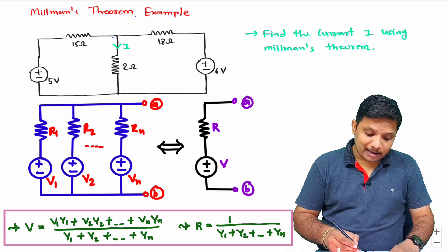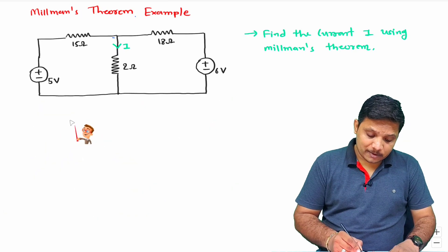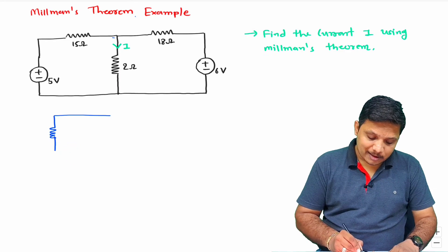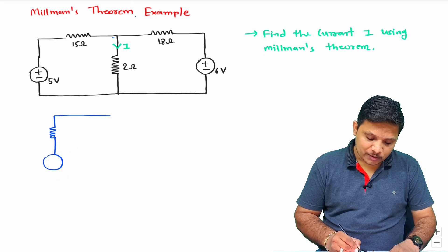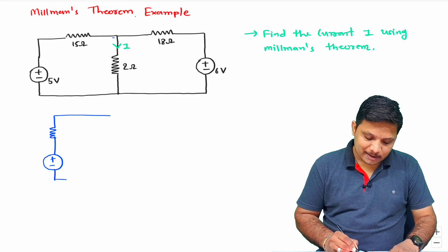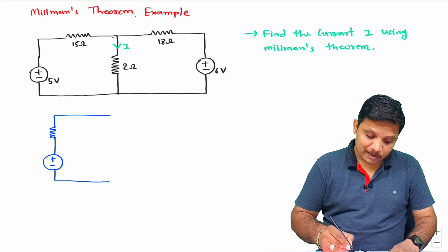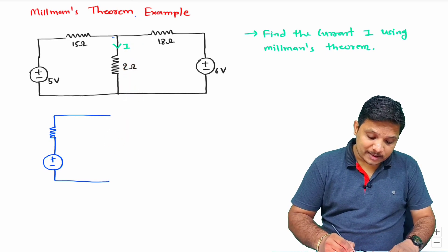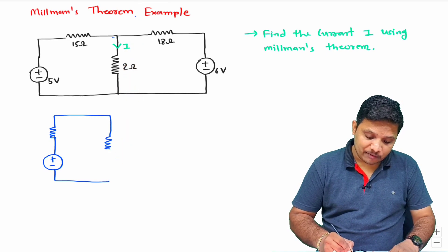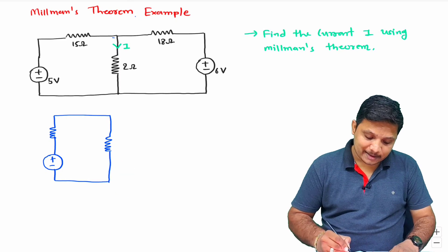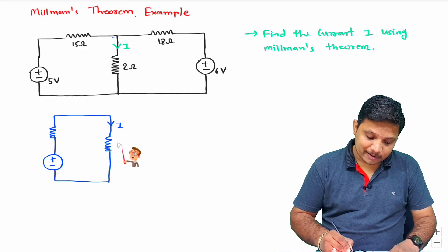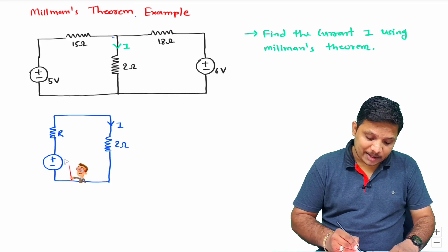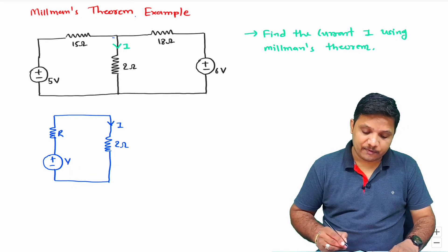So here I will be considering that as equivalent resistance and voltage source as per Millman's theorem. And here I will consider this 2 ohm resistor through which we are asked to find current as load. Now our agenda is to identify the value of R and the value of V.